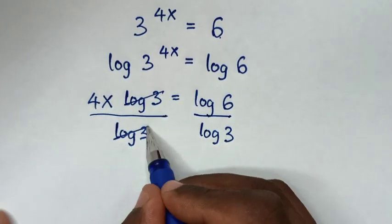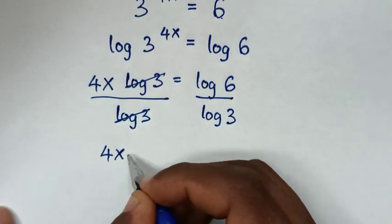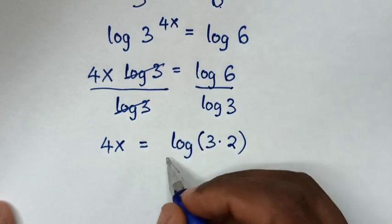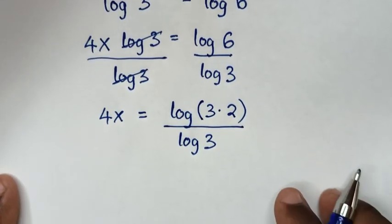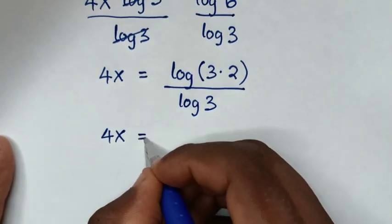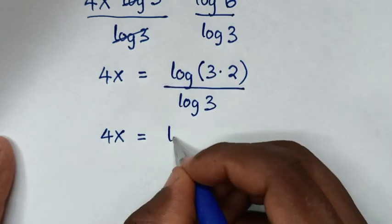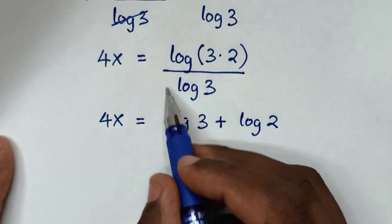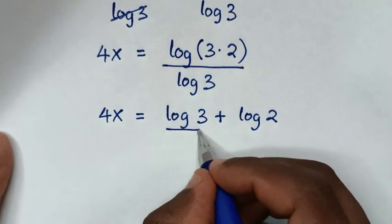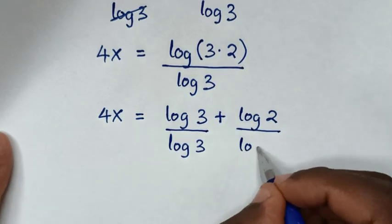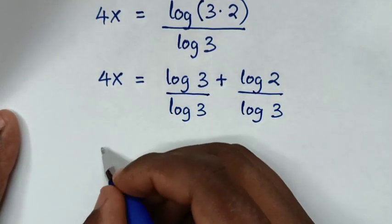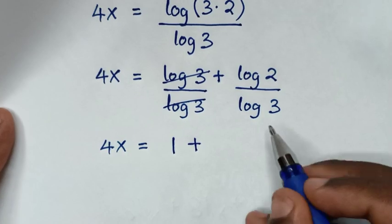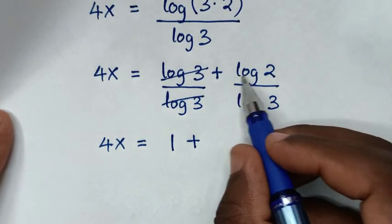So log(3) and log(3) will cancel. Then 4x is equal to log(6), which is the same as log(3 × 2). We'll expand this: log(3 × 2) is equal to log(3) plus log(2). Then we'll divide by log(3) in both parts, so it will be log(3) over log(3) plus log(2) over log(3).